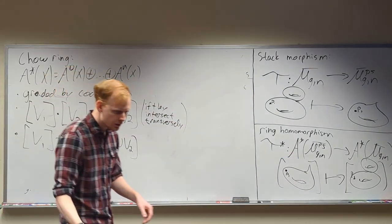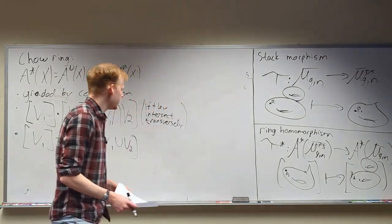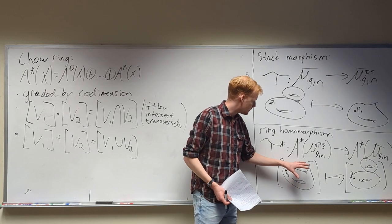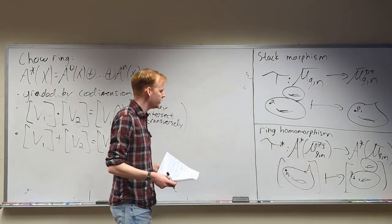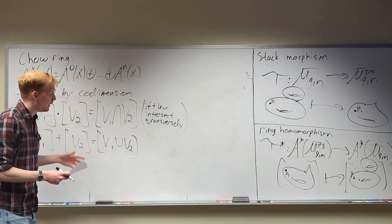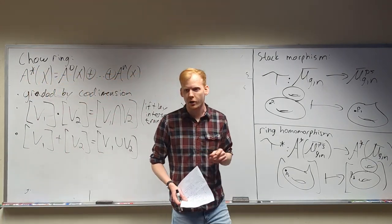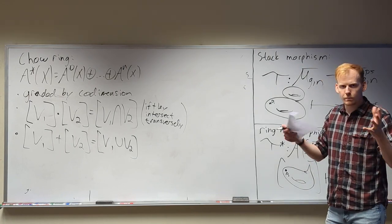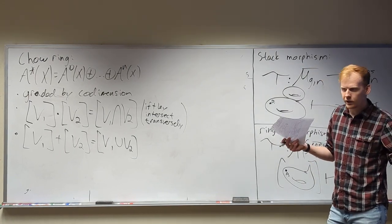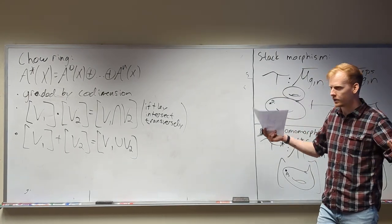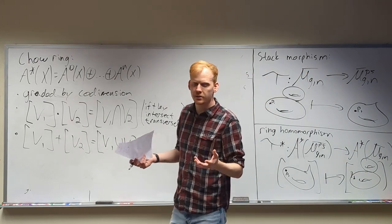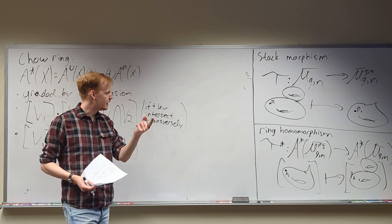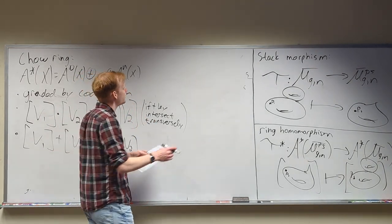These classes of curves aren't the only objects living in the Chow ring. There are two types of objects in particular that we're going to care about: psi classes and lambda classes. Those are important objects in Gromov-Witten theory — think string theory, physics — a lot of their computations end up boiling down to these two types of classes.